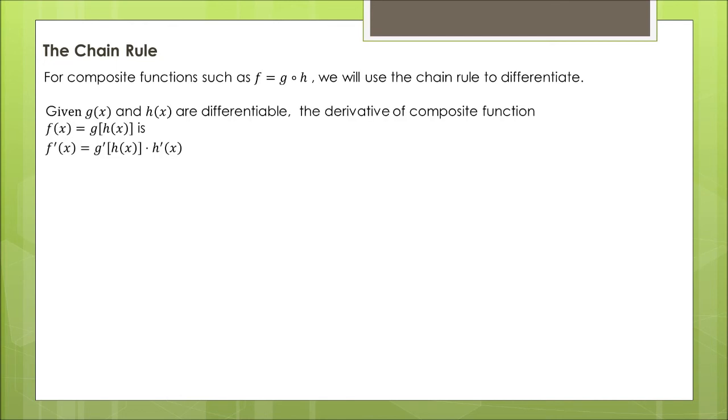So the chain rule states that for two given functions g of x and h of x that are differentiable, the derivative of composite function f of x which is g of h of x is the derivative of g of h of x times the derivative of h of x. So first we differentiate the function and then we differentiate the argument of that function.